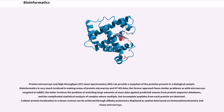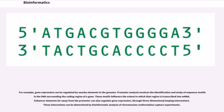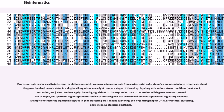Regulation is the complex orchestration of events by which a signal, potentially an extracellular signal such as a hormone, eventually leads to an increase or decrease in the activity of one or more proteins. Bioinformatics techniques have been applied to explore various steps in this process. For example, gene expression can be regulated by nearby elements in the genome. Promoter analysis involves the identification and study of sequence motifs in the DNA surrounding the coding region of a gene. These motifs influence the extent to which that region is transcribed into mRNA. Enhancer elements far away from the promoter can also regulate gene expression through three-dimensional looping interactions. These interactions can be determined by bioinformatic analysis of chromosome conformation capture experiments.